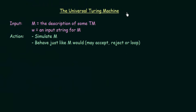Let us see what are the inputs and actions in a universal Turing machine. The input to the universal Turing machine is the description of some Turing machine M, plus W, an input string for M. These two will be passed to the universal Turing machine. The action it performs is to simulate M — it simulates the Turing machine M and behaves just like M would behave. So it may sometimes accept, sometimes reject, or sometimes loop.